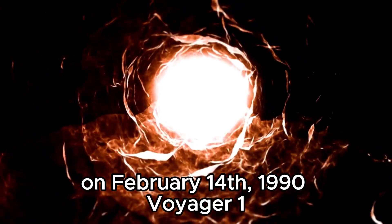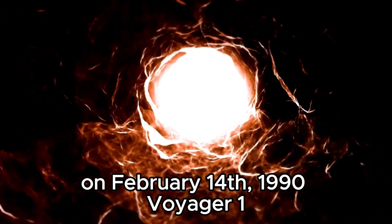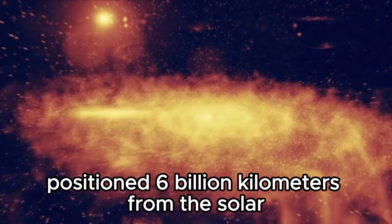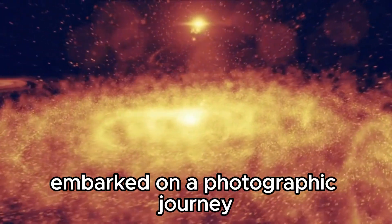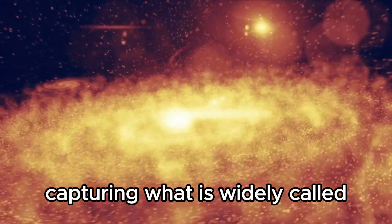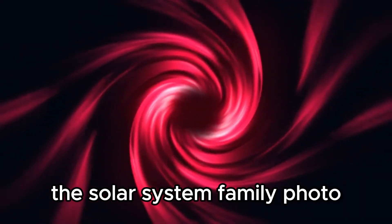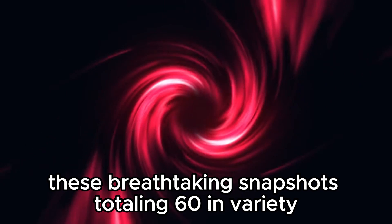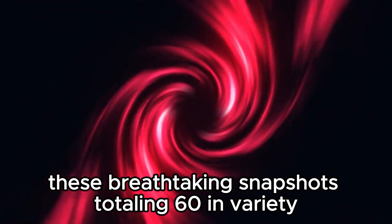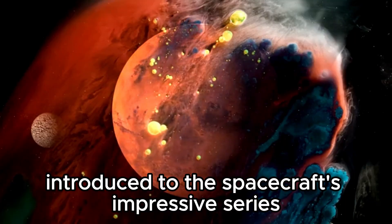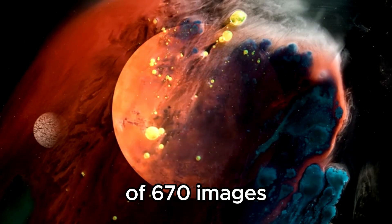On February 14, 1990, Voyager 1, positioned 6 billion kilometers from the Sun, embarked on a photographic journey, capturing what is widely called the solar system family photo. These breathtaking snapshots, totaling 60 in number, added to the spacecraft's impressive collection of 670 images.